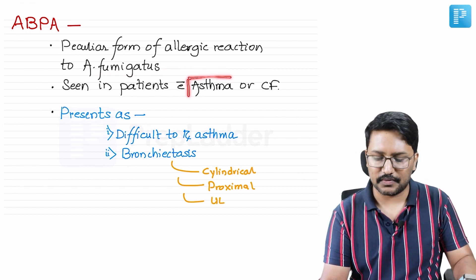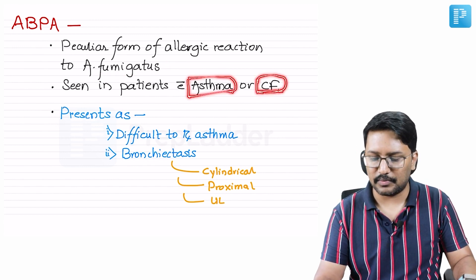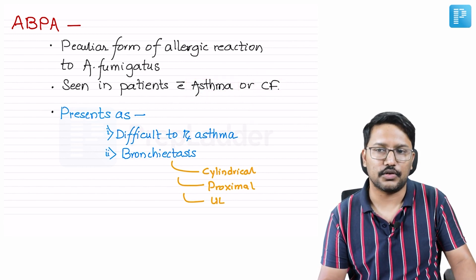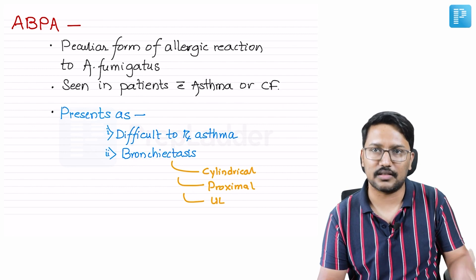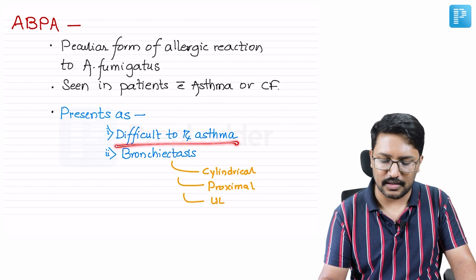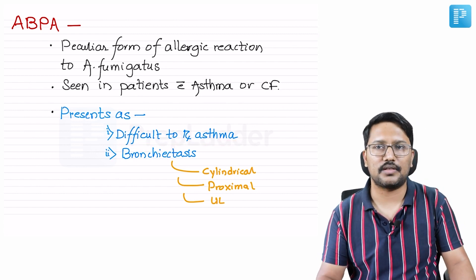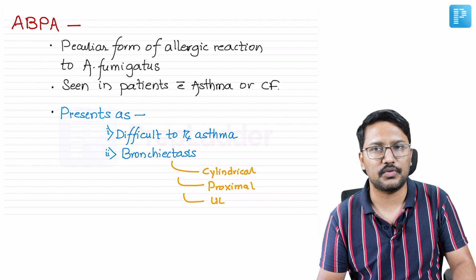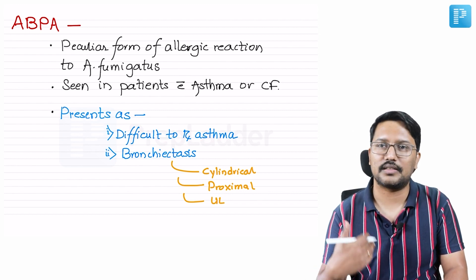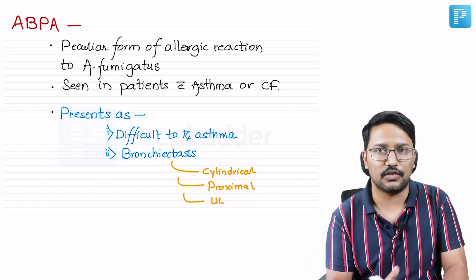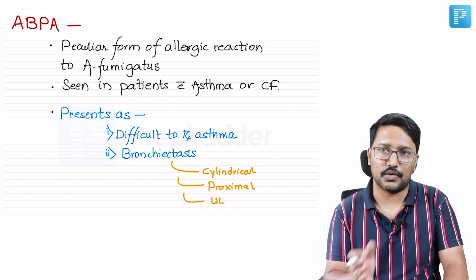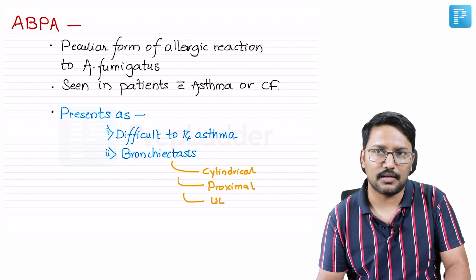ABPA is typically seen in patients with asthma, cystic fibrosis, and sometimes chronic granulomatous disease. It is not seen in COPD patients. It presents in the form of difficult-to-treat asthma — we suspect ABPA in a patient whose asthma was well-controlled and suddenly lost control, with symptoms we are struggling to manage despite escalating medications.